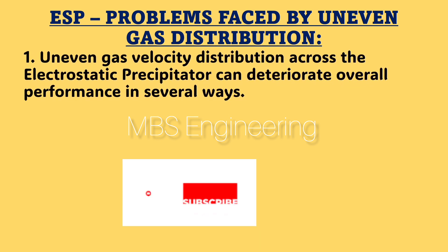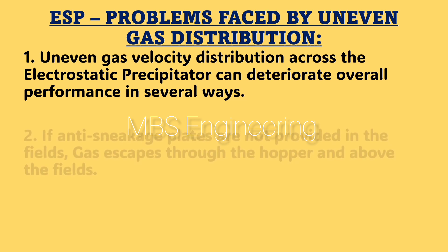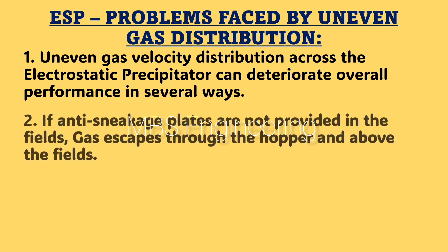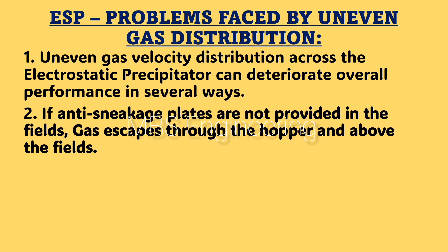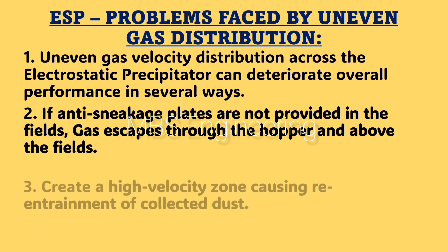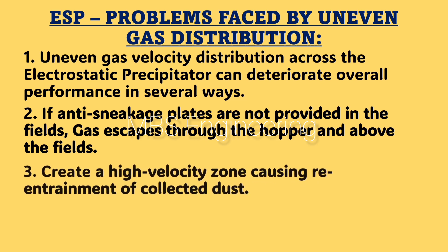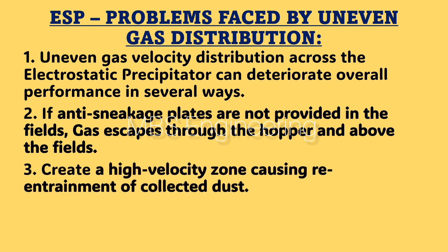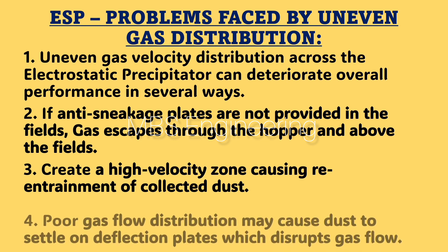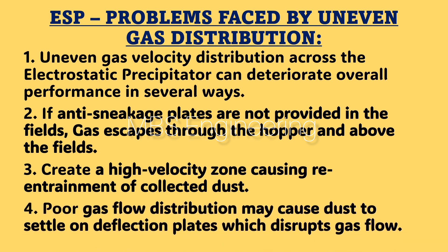Problems faced by uneven gas distribution in the ESP: Point 1: uneven gas velocity distribution across the electrostatic precipitator can deteriorate overall performance in several ways. Point 2: if anti-sneakage plates are not provided in the fields, gas escapes through the hopper and above the fields. Point 3: it creates a high velocity zone causing re-entrainment of collected dust. Point 4: poor gas flow distribution may cause dust to settle on deflection plates, which disrupts gas flow.